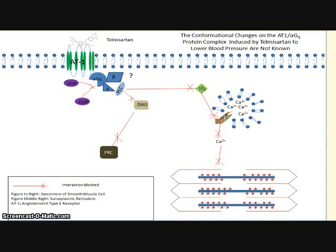IP3 acts on the sarcoplasmic reticulum to ultimately cause calcium to be released. Calcium acts on the sarcomere of the smooth muscle cells to cause vasoconstriction, which ultimately increases your blood pressure.